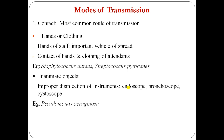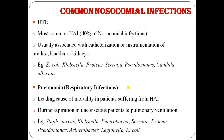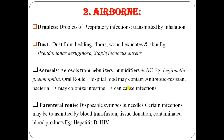Airborne transmission can occur through droplet infection from dust or aerosols. Parenteral route can occur through blood transfusion or blood donation. Dust from bedding and floors, and droplets of respiratory infections, can be transmitted by inhalation.